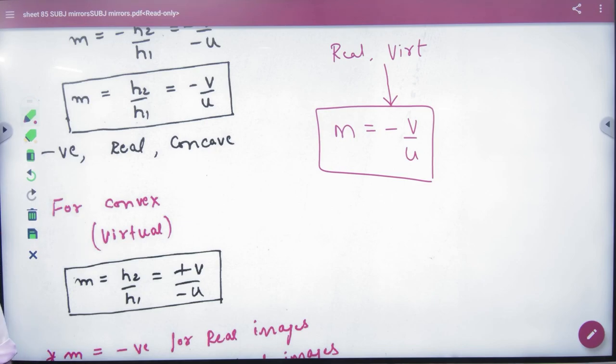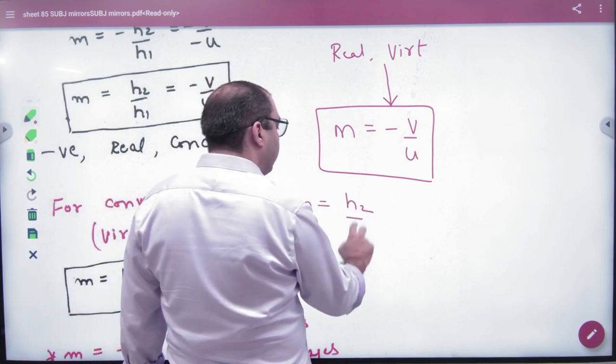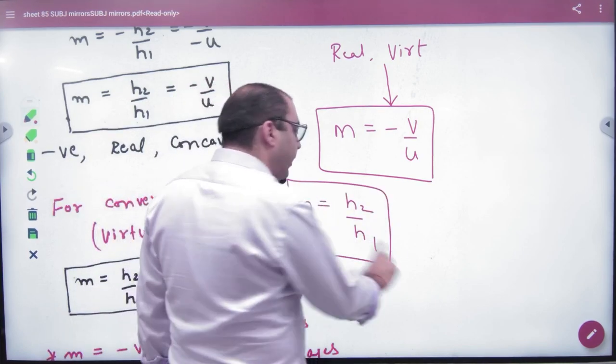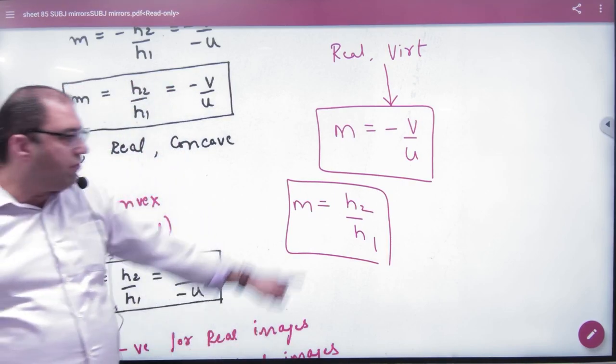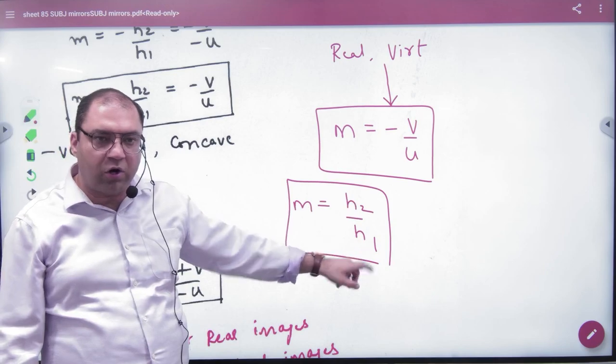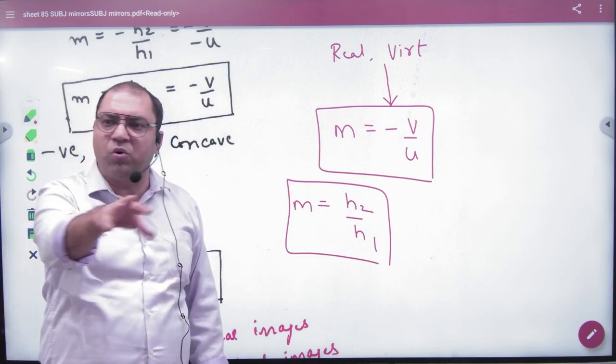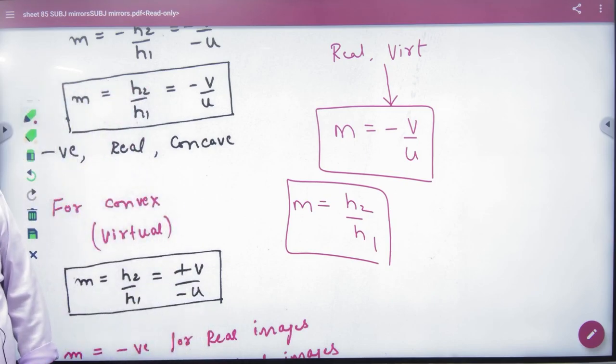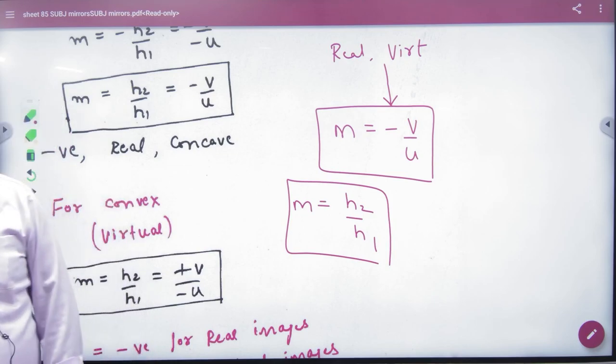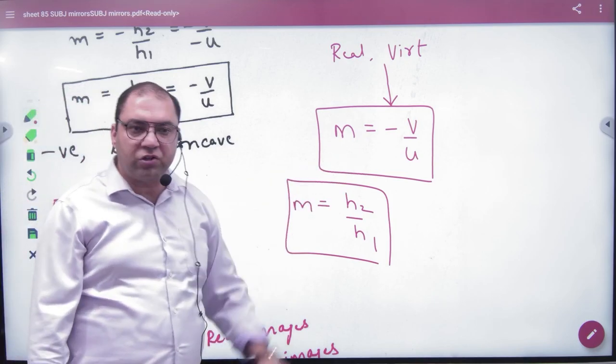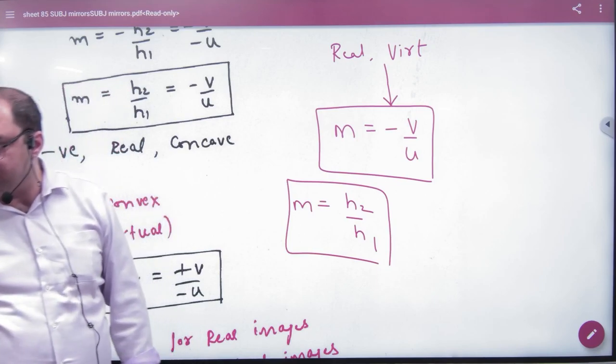Okay, the second formula. The second formula: magnification H2 by H1. Note this - according to question, if it is real image, it will become inverted. Obviously, H2 will become negative, H1 will become positive. And if it becomes a virtual image, then both will become positive. So according to question, we will handle it. So first formula, if it comes to H and H, then we will put this formula with the sign convention. And the second, if magnification minus V by U is given, then V and U values will be put in the magnification. We will use two formulas.